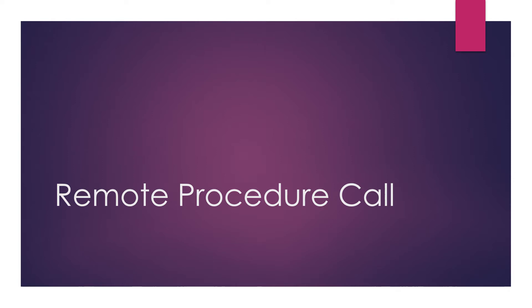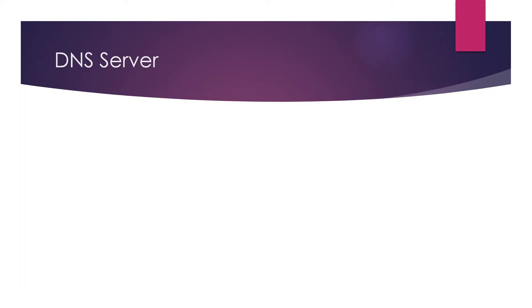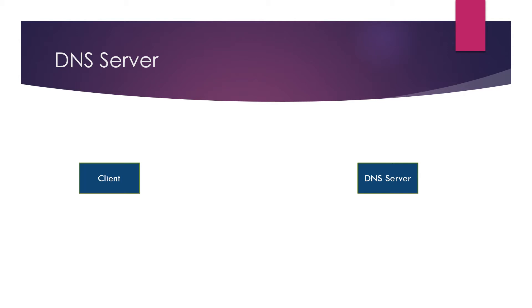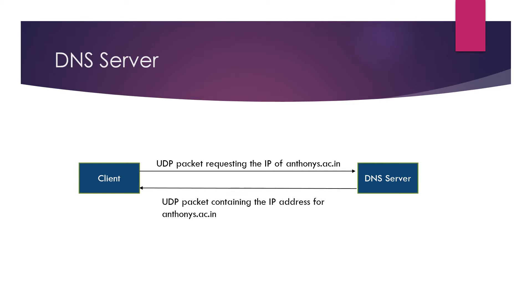Let's examine what a remote procedure call is. In the previous lecture we talked about the DNS server application — you have a client and a DNS server. The client wants the IP address for, say, iitm.ac.in, so it sends a request as a UDP packet. The server finds the IP address and puts it in a UDP packet as the response. Don't you think this looks like a function call or a procedure call?